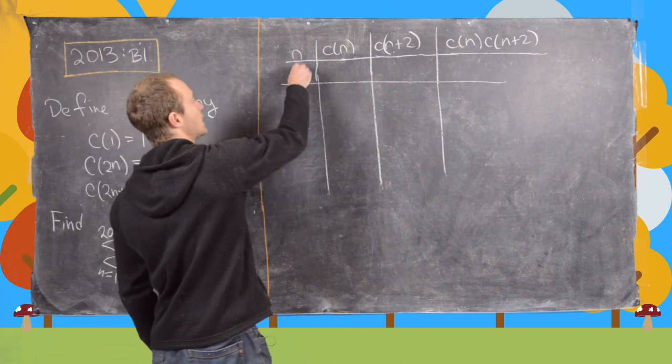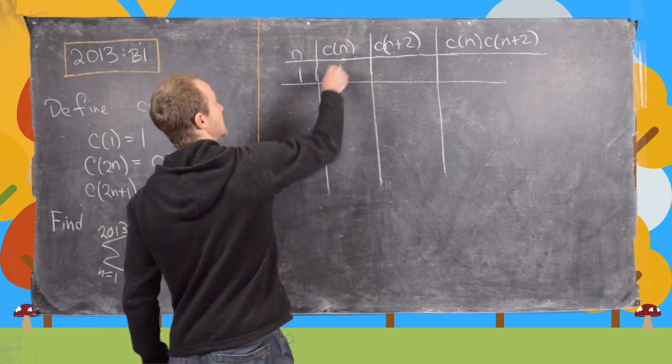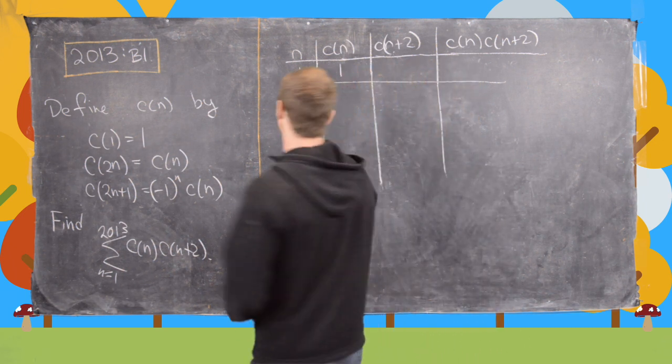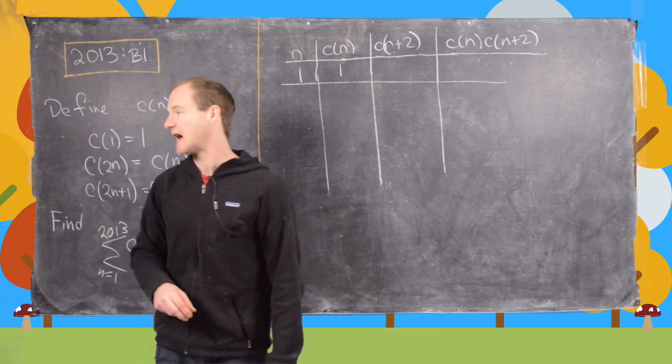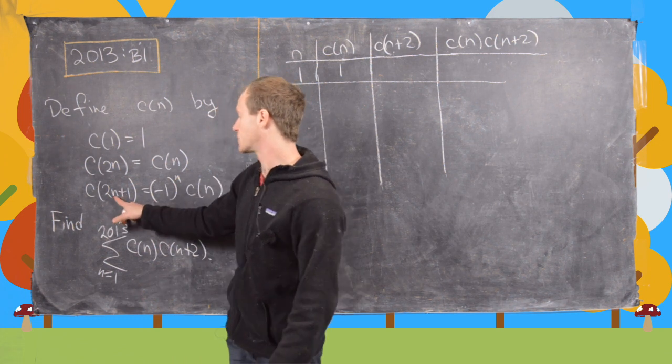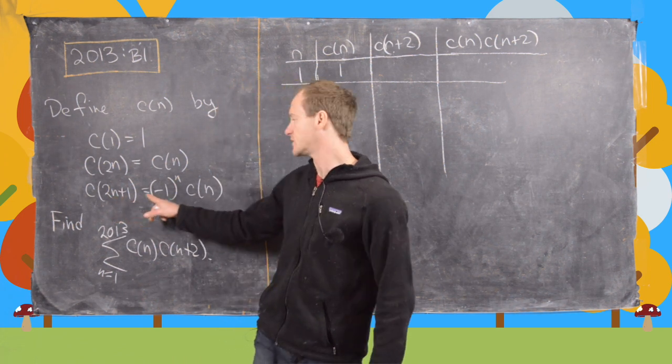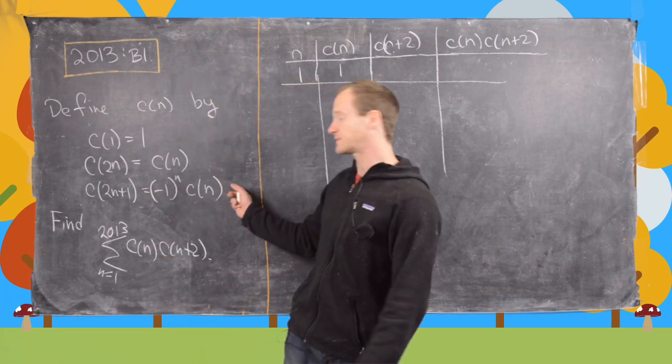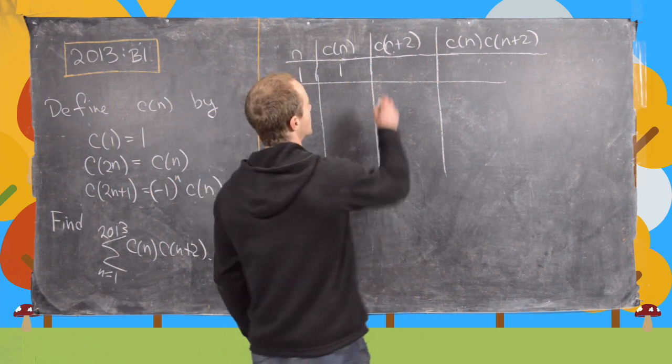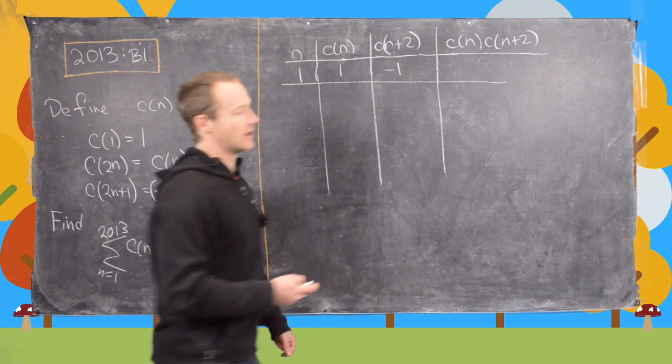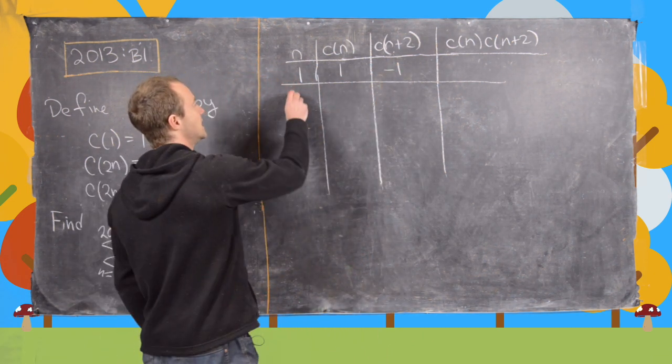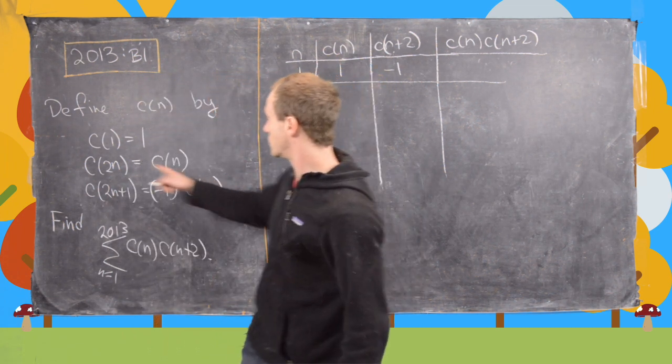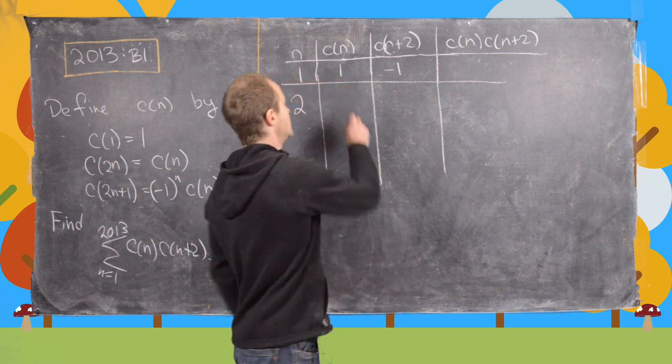If n equals 1, then c_n equals 1. But now c_(n+2) is c_3, which can be written as 2 times 1 plus 1. So that's going to be (-1)^1 times c_1 by this part of the recursion right here. So this is going to be negative 1. Now let's look at n equals 2. So we have c(2) is going to be c(1), so this is 1.